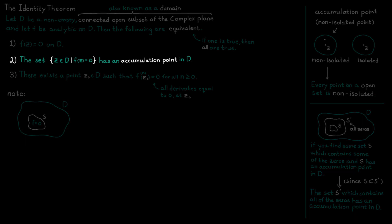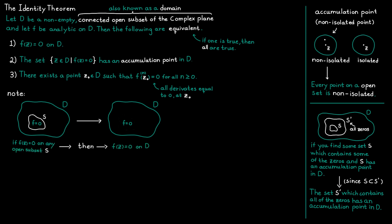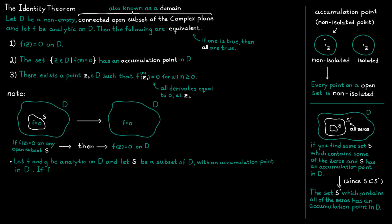We have therefore proved the second statement of the identity theorem, and since that statement is true, all of them must be true — meaning f equals zero on the whole domain D. This is a very strong result: if f equals zero on any open subset, it is equal to zero everywhere. We can extend this further: let f and G both be analytic on D, and let S be a subset with an accumulation point in D, such as an open subset. If f and G agree on S, they agree on the whole domain D.